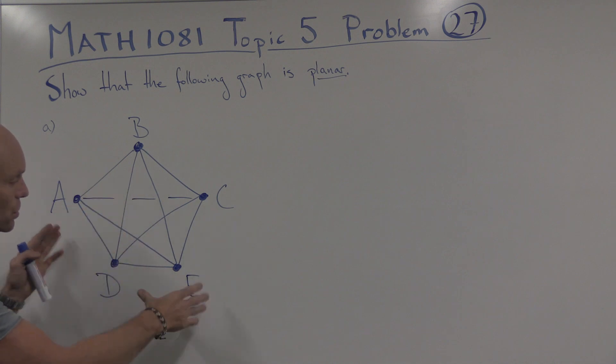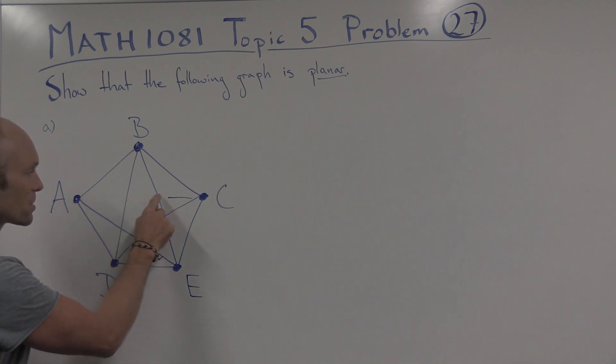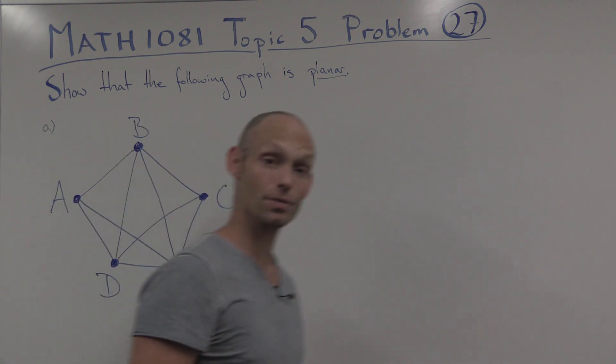So if you took this new graph here, K5, and tried to redraw it in a planar way, you'd fail. And you're very welcome to try that, just to convince yourself. But if we just take one edge out, like this, then apparently this is a planar graph, and that's what we have to show. So, let's do that.